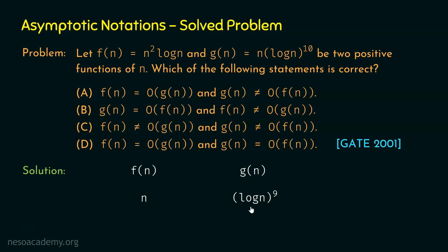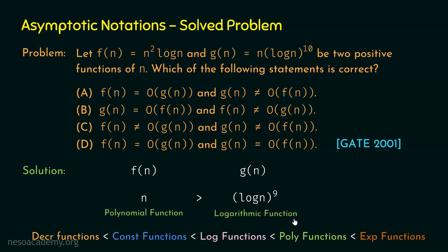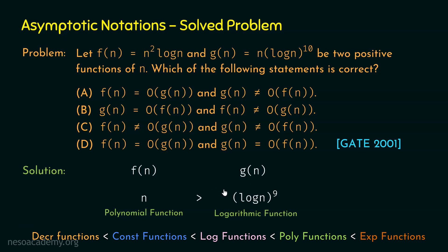Now let's compare these two simplified functions. There is no further simplification possible. We have n versus (log n)^9. n is clearly greater than (log n)^9 because n is a polynomial function and (log n)^9 is a logarithmic function. The growth rate of polynomial functions is higher than the growth rate of logarithmic functions. So n > (log n)^9, and hence f(n) > g(n), meaning g(n) = O(f(n)). We cannot say f(n) = O(g(n)).